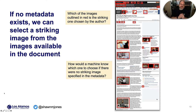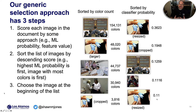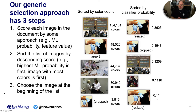If no metadata exists in a page, we can select a striking image from the images available in that page. I took a screenshot of a Wall Street Journal article titled 'Choosing the Right Healthcare Plan' and outlined all of the images in red — but which one would a machine know to choose? Our generic selection approach has three steps: score each image in the document by some approach, sort the list of images by descending score, and choose the image at the beginning of the list. We sorted all images by color count, finding the one with the most colors was the man in front of the brown menu. Sorting by classifier probability, the person giving the injection was chosen.